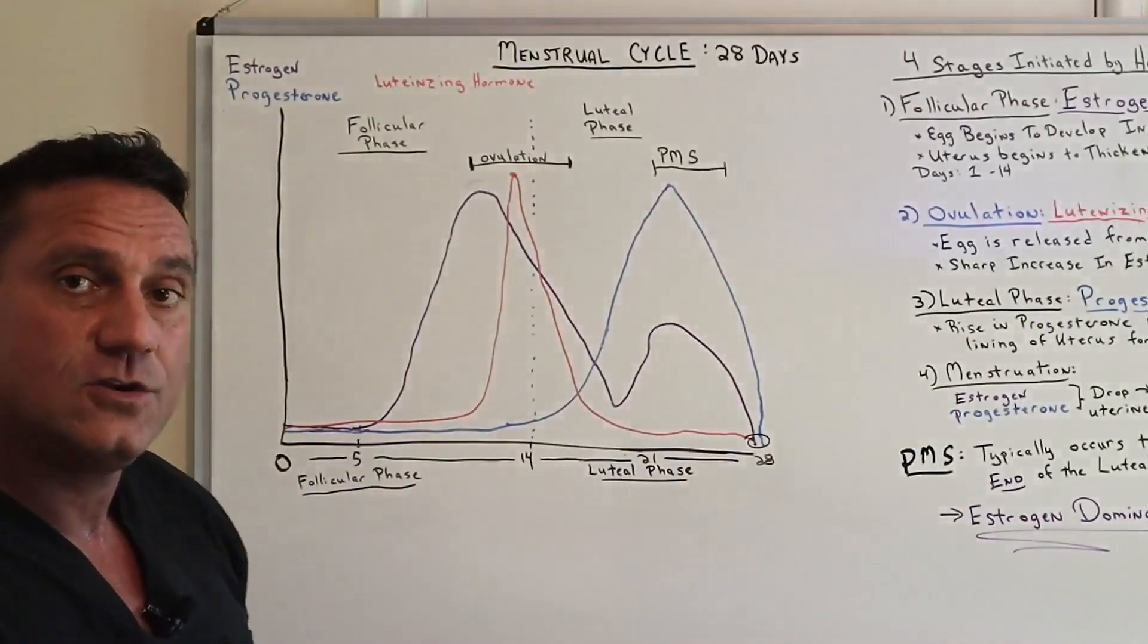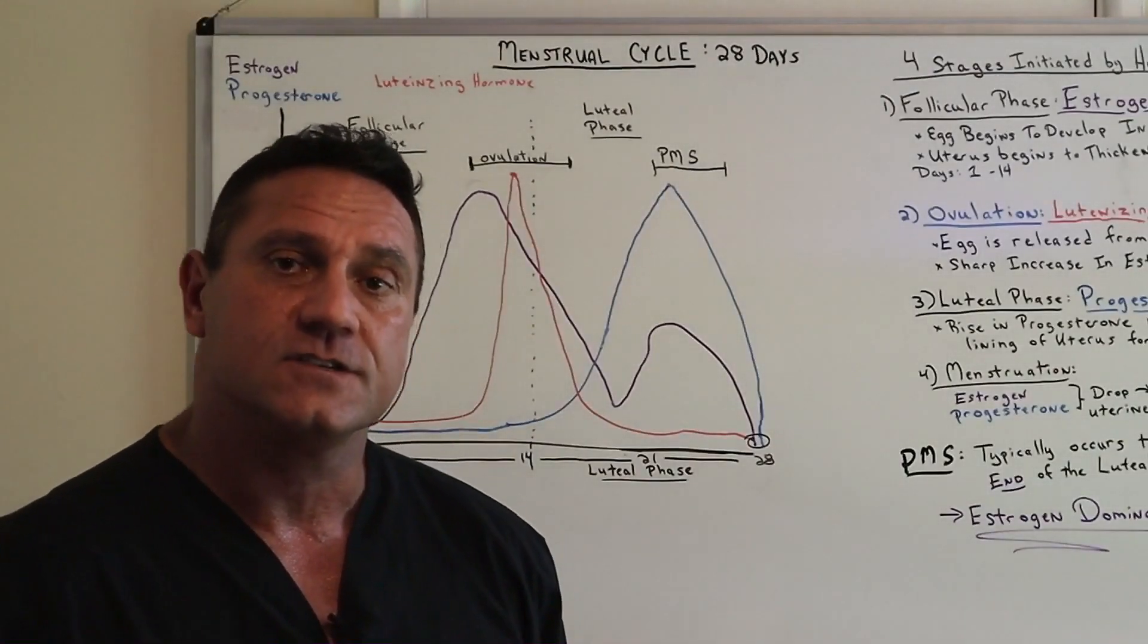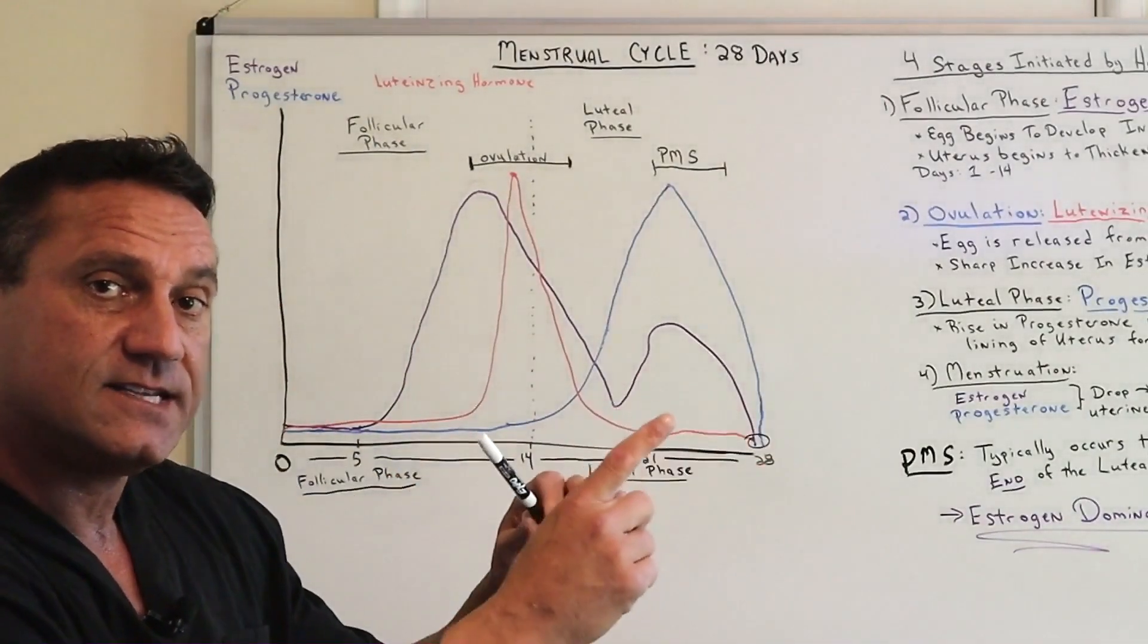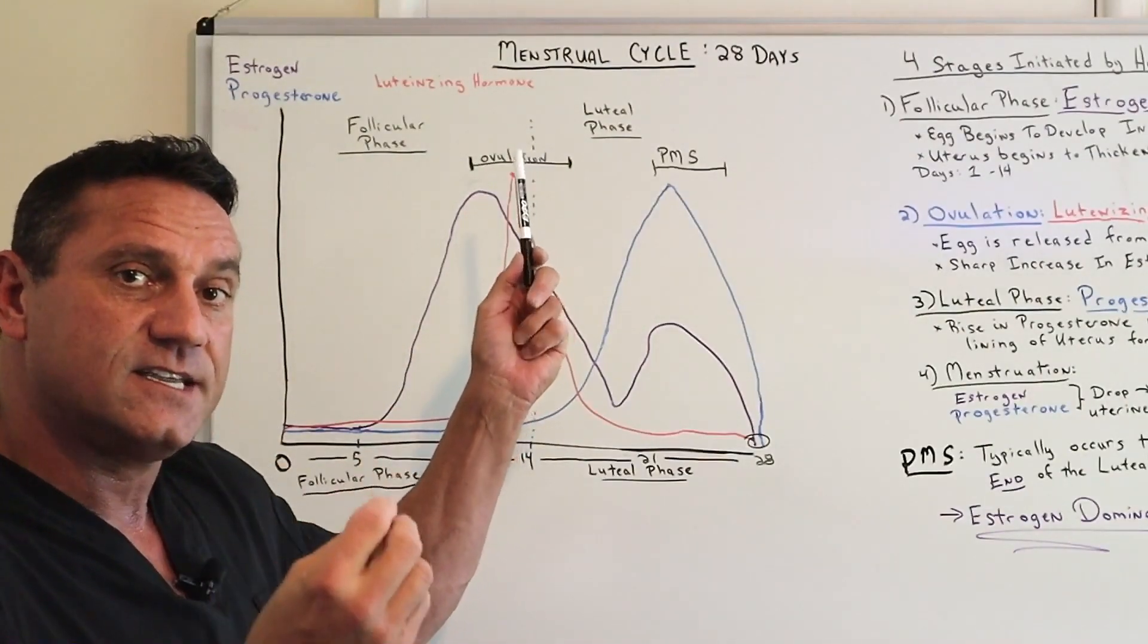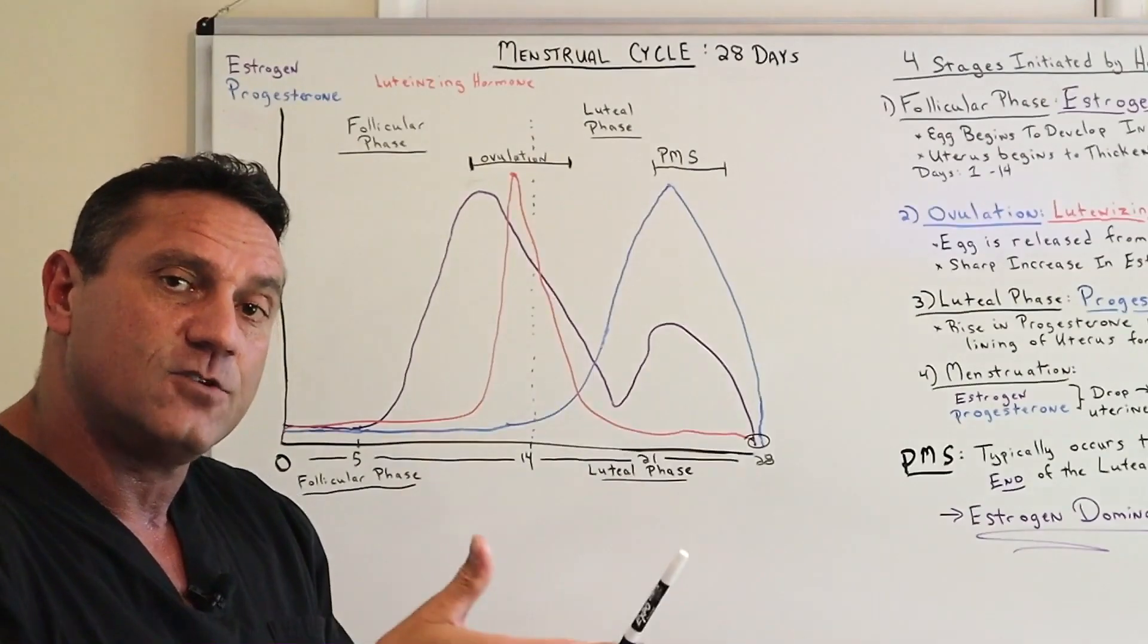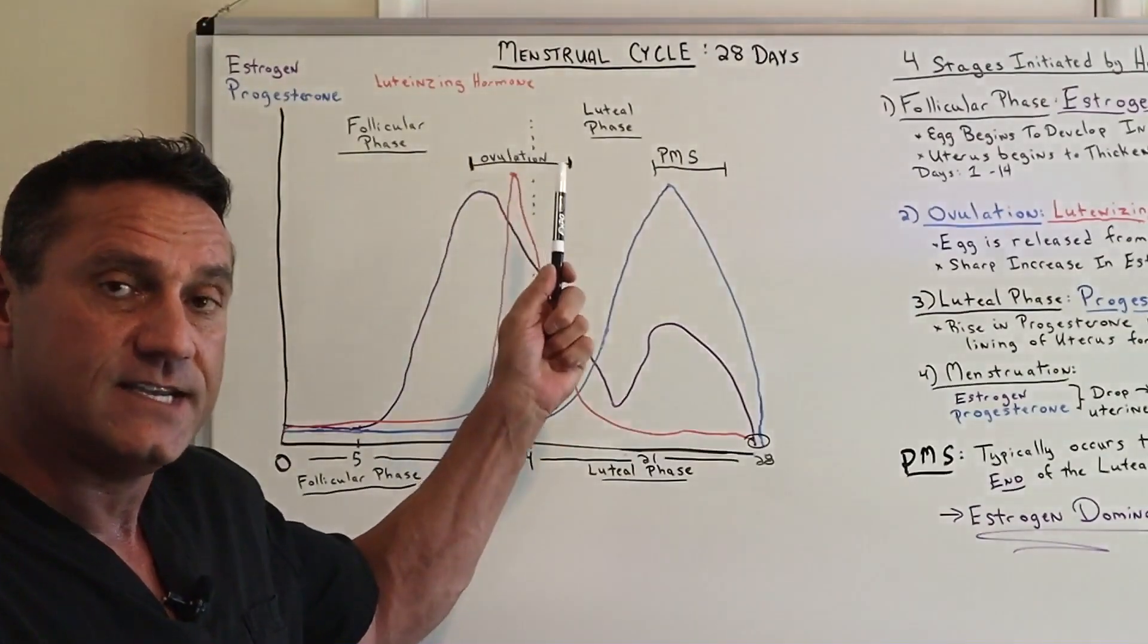Now another hormone called luteinizing hormone, which is under the influence of progesterone, that releases and that triggers ovulation. So the egg is released out of the ovary and it starts to make its way down the fallopian tube during the ovulation phase.